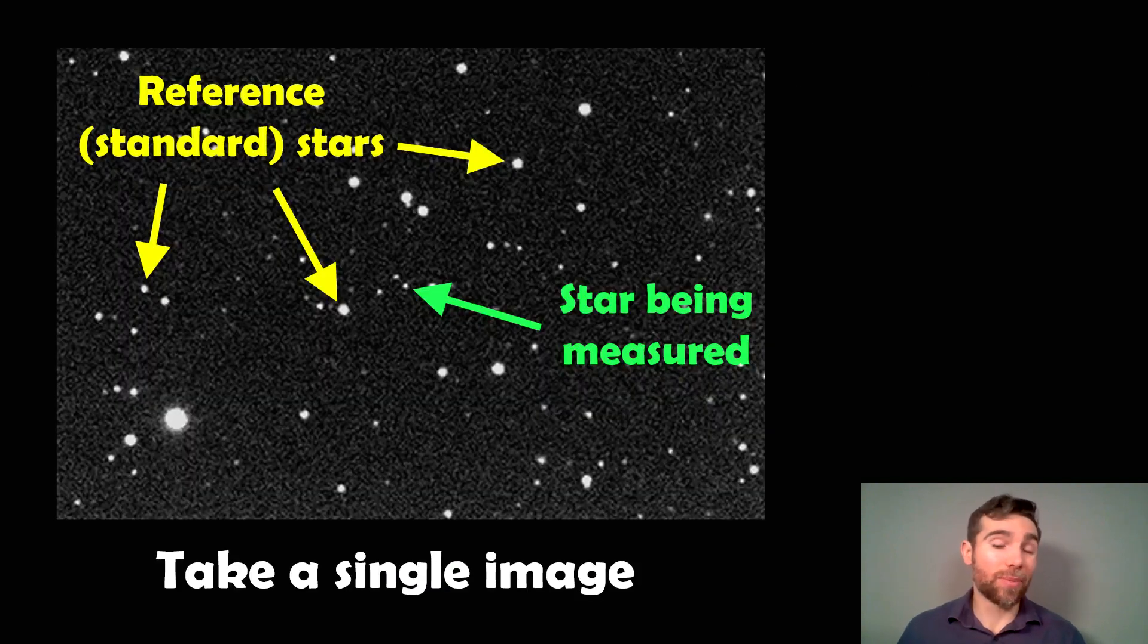An example might be here. You've got a field of stars. The one in the center is the one you're actually measuring, where you want to detect the exoplanet passing in front. Then you may use a collection of reference stars or standard stars which should remain a constant magnitude or brightness. That variability can then be used to get a more stable measurement of your star. Basically, you get a single image when you're doing this.